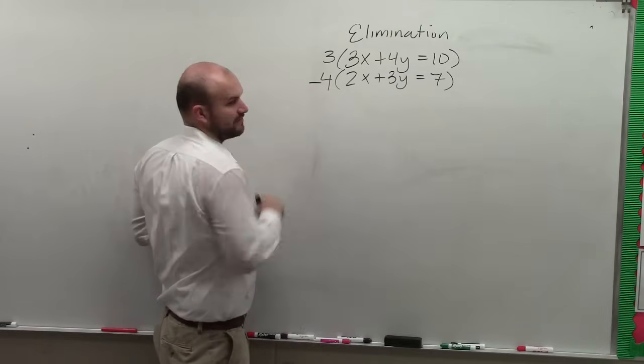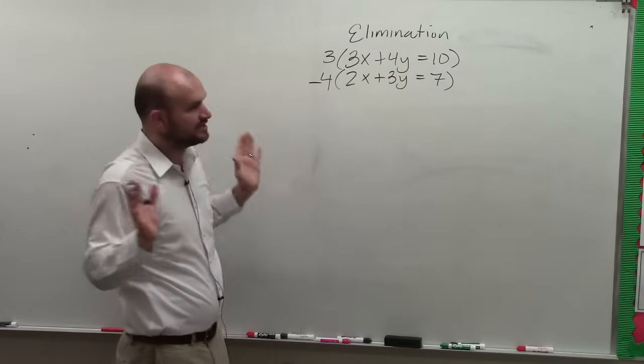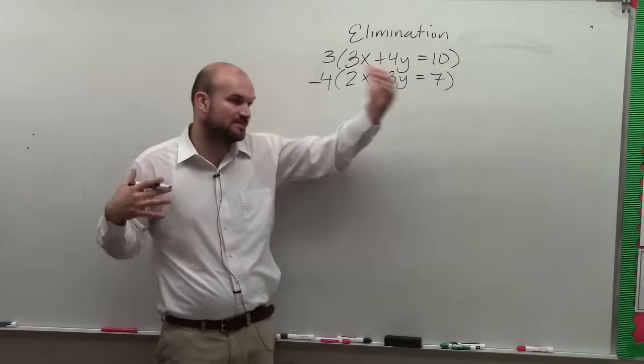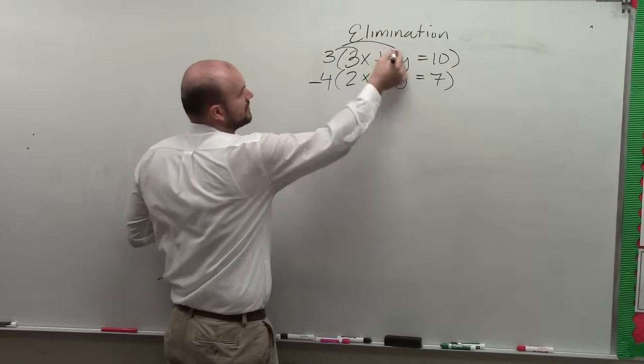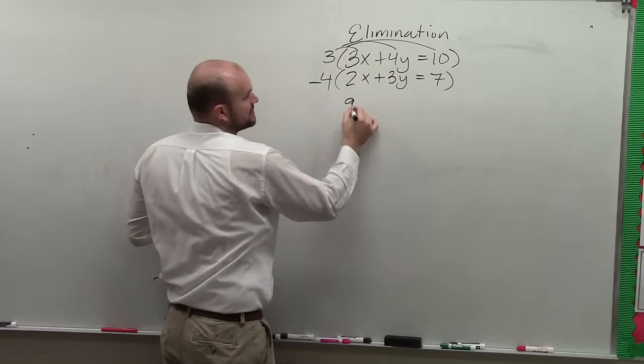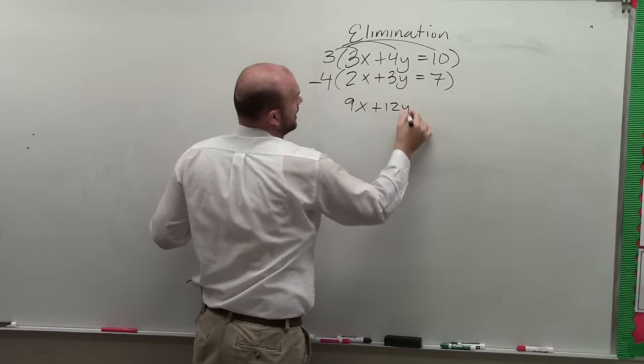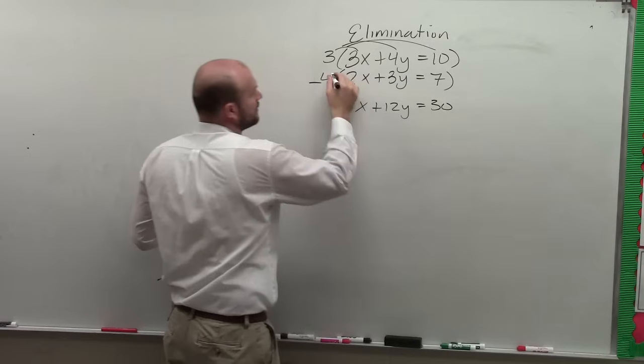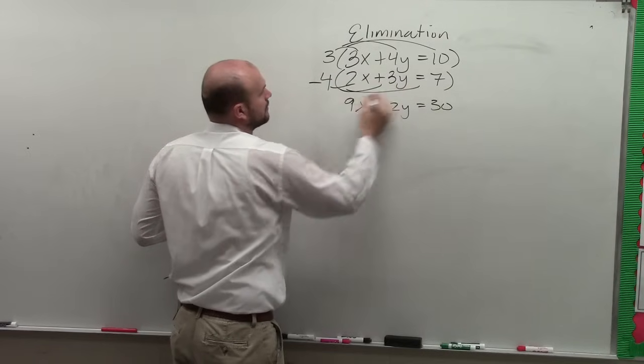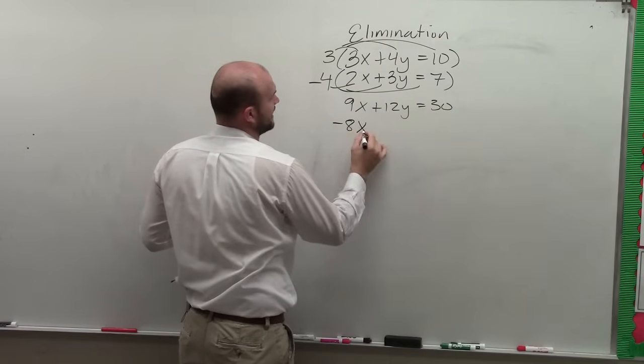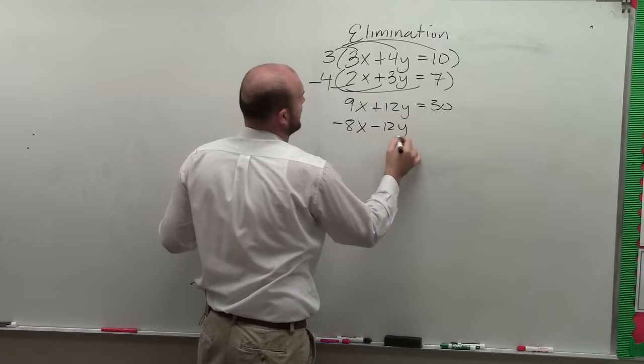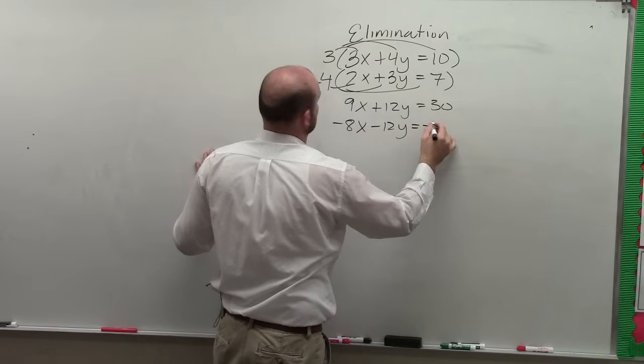So therefore I need to make one of them negative. Doesn't matter which one. You just need to make, when you're adding, you've got to make sure one's positive, one negative. All right, so now let's go and do the math. Remember, when you're multiplying you've got to multiply everything. So this is 9x plus 12y equals 30. This becomes negative 8x minus 12y equals negative 28.